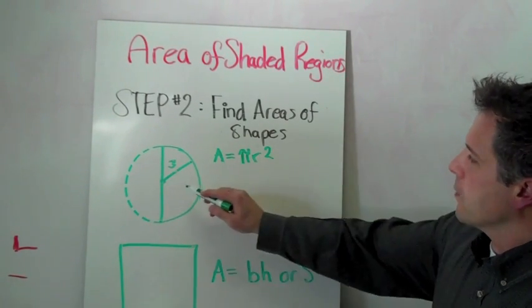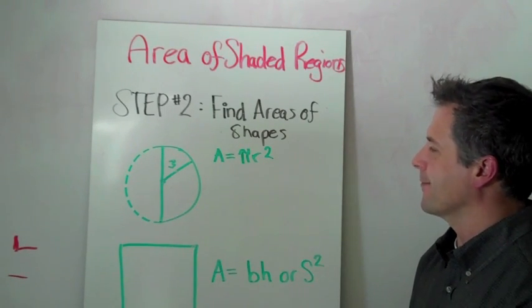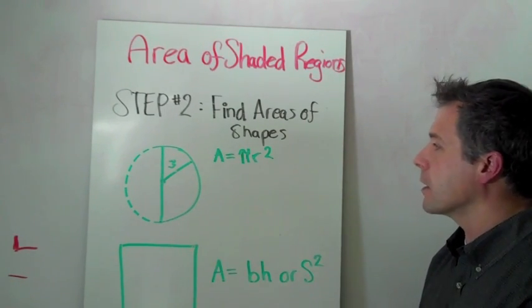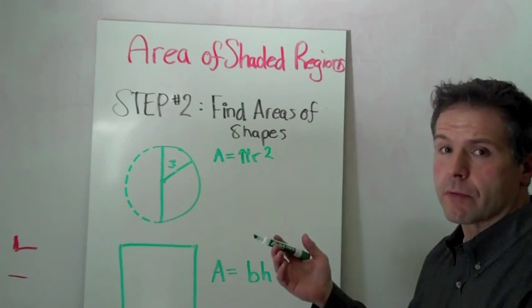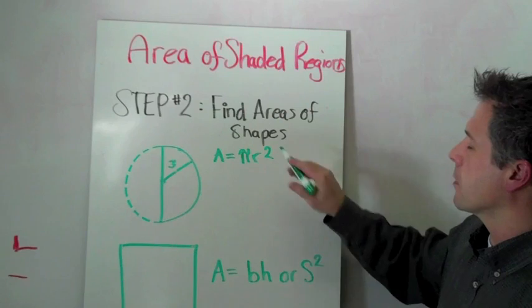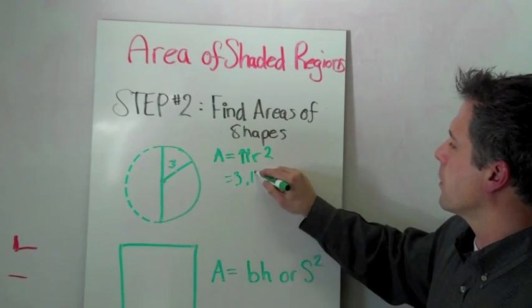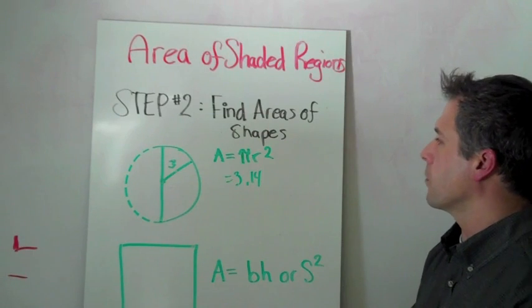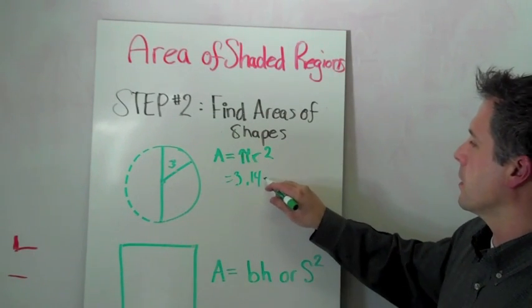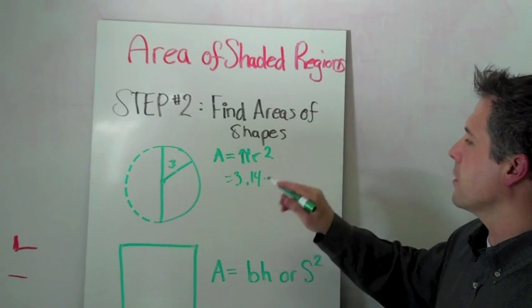We need to find the area of the shapes. The first shape, which was a half circle - they tell us that the radius is 3. If you have the radius of a circle there's no problem, you can find the area. It's simply pi times r squared. So pi we know is approximately 3.14. The radius is 3, so we're going to multiply that by 3 to the second power, and 3 to the second power, 3 times 3, is 9.